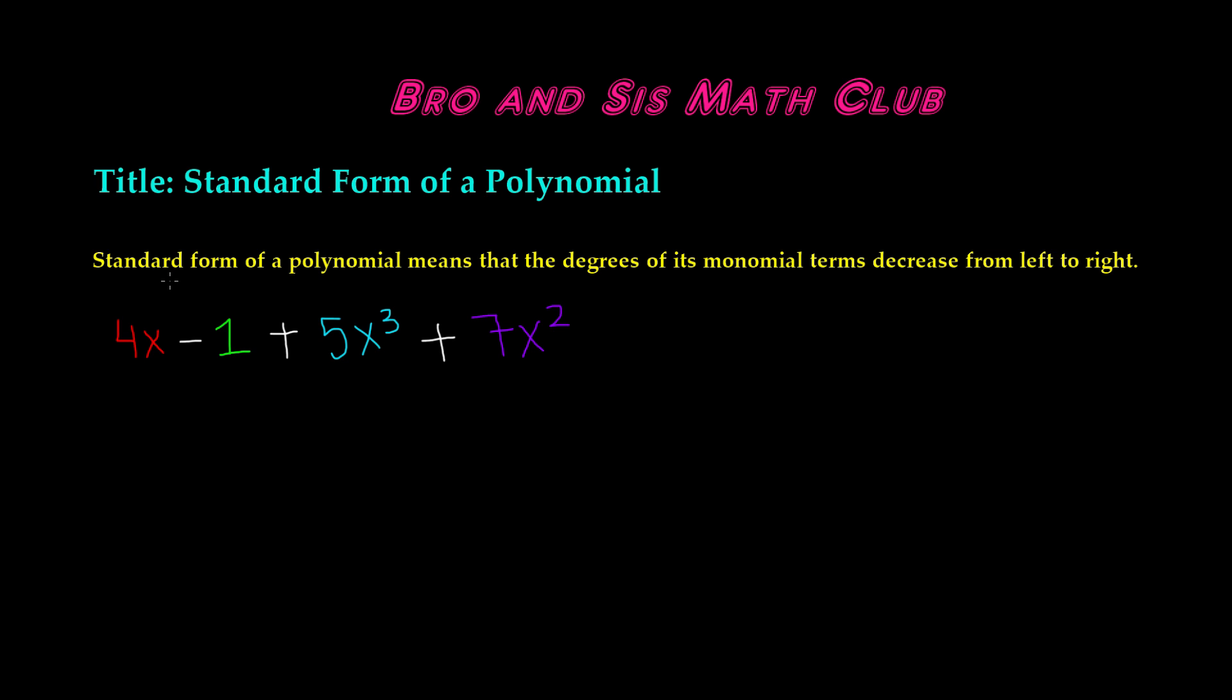In order to write this in standard form, we need to find the degree of each of the monomials. So there are four terms in this polynomial, that means there are four monomials, and remember, monomial is a single term.